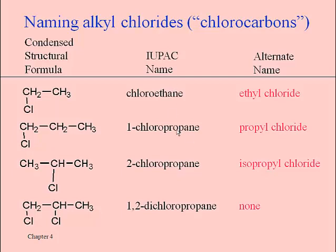So we get the possibility of lots of different possible alkyl chlorides, and of course we can substitute the chlorine for bromine, iodine, or fluorine to get the corresponding molecules. There's plenty more practice of naming among the exercises at the end of chapter 4, so you can be taking a look at those as well.